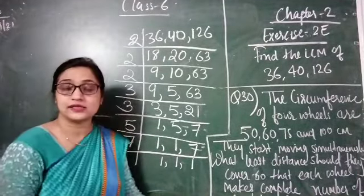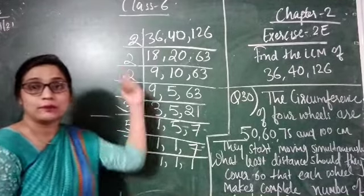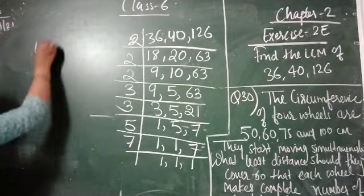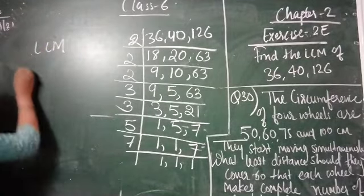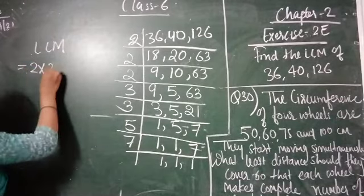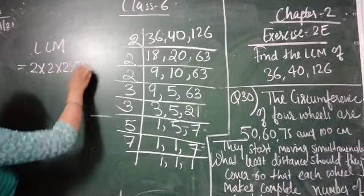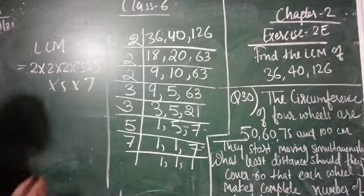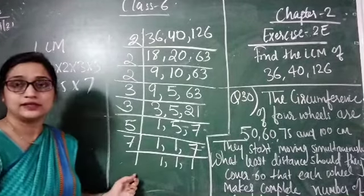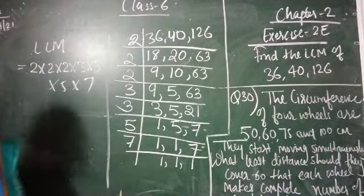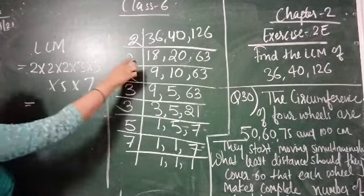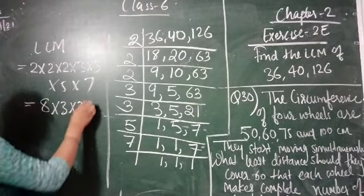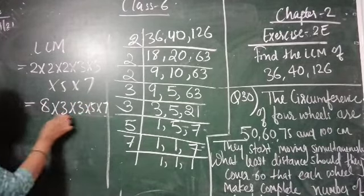Now our next step for finding the LCM is to multiply the prime numbers we used. The prime numbers are: LCM = 2 × 2 × 2 × 3 × 3 × 5 × 7. Now we multiply these prime numbers one by one: 2 × 2 = 4, 4 × 2 = 8, then × 3, × 3, × 5, × 7.